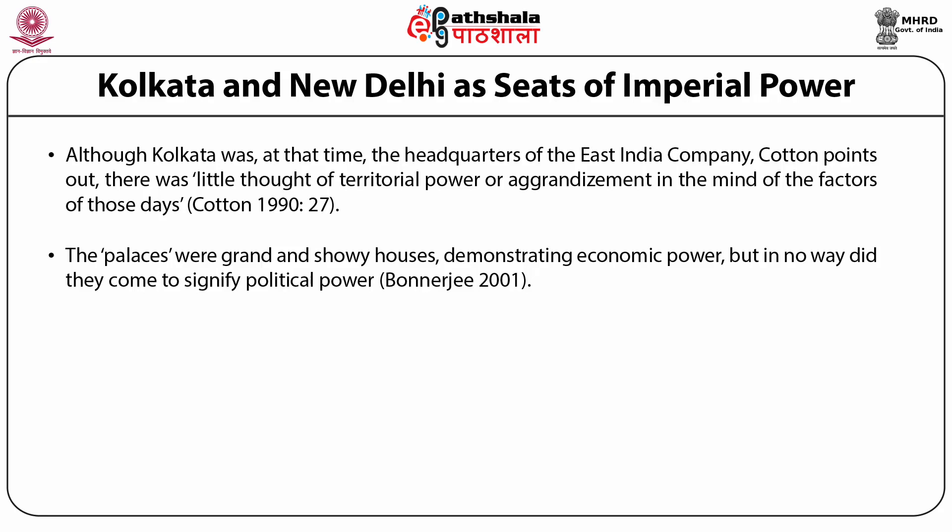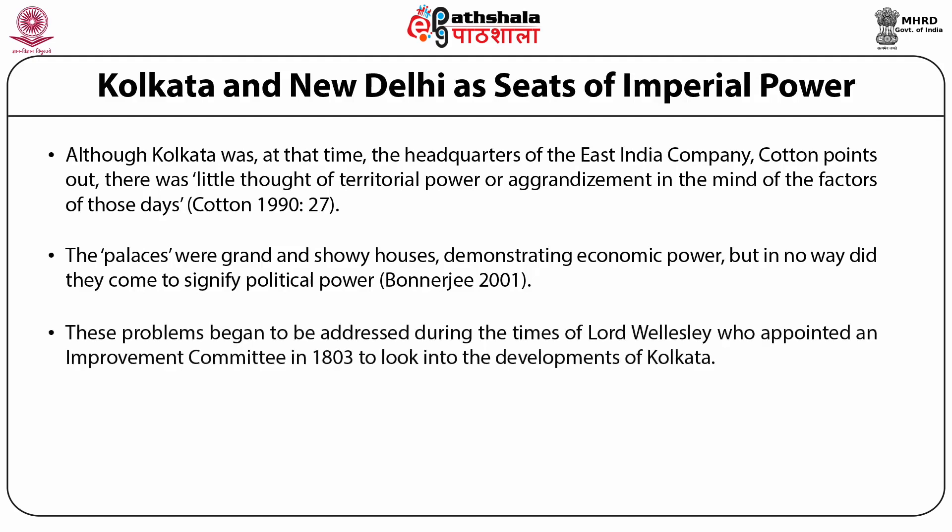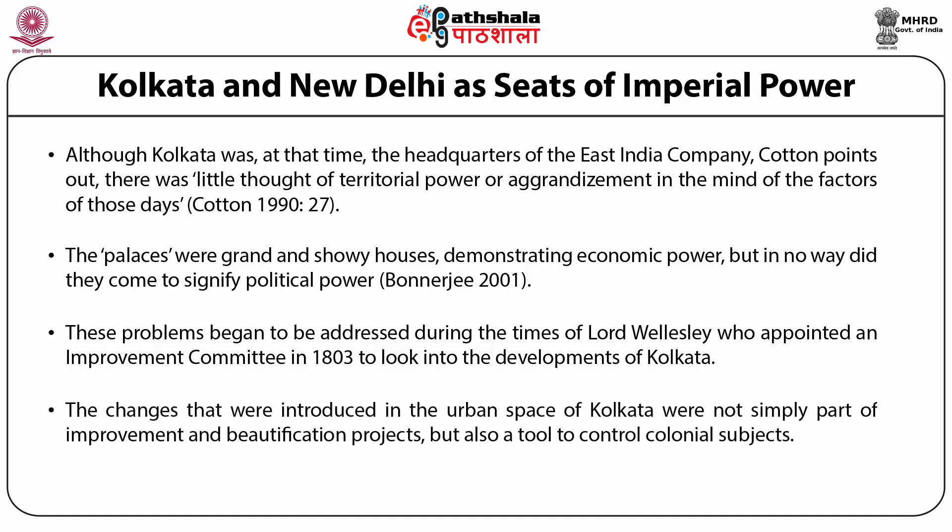By the end of the 18th century, Kolkata had emerged as the second city of the British Empire. However, unplanned growth had led to municipal problems such as overcrowding and unhealthy villages. Problems began to be addressed during the times of Lord Wellesley, who appointed an improvement committee in 1803. While improving health and sanitation was the principal motive for various plans, it also led to changes in the indigenous neighborhood patterns typified by winding lanes and a closed-knit structure. The changes introduced in the urban space of Kolkata were not simply part of improvement and beautification projects, but also a tool to control colonial subjects.